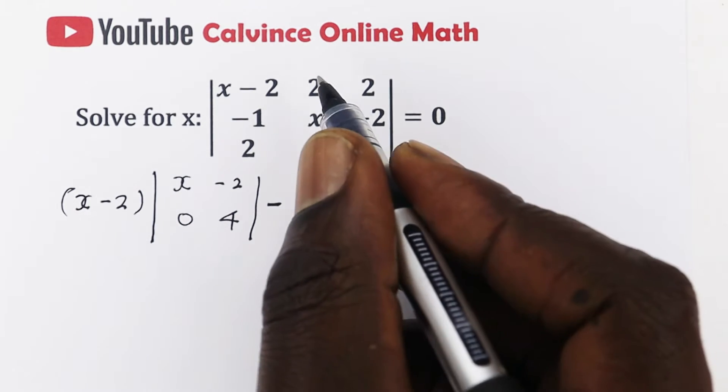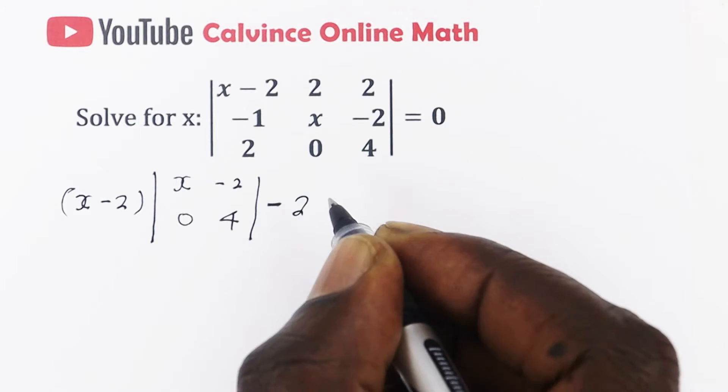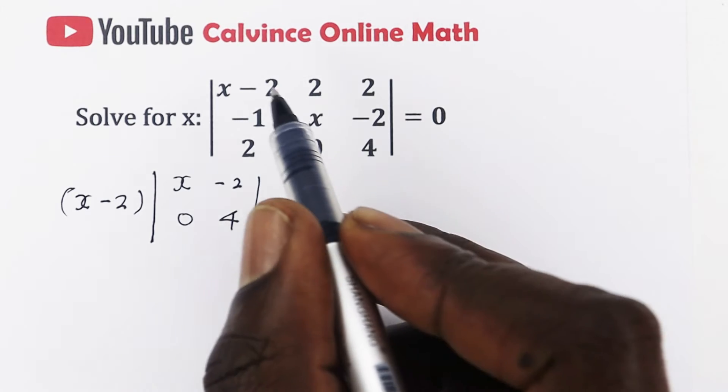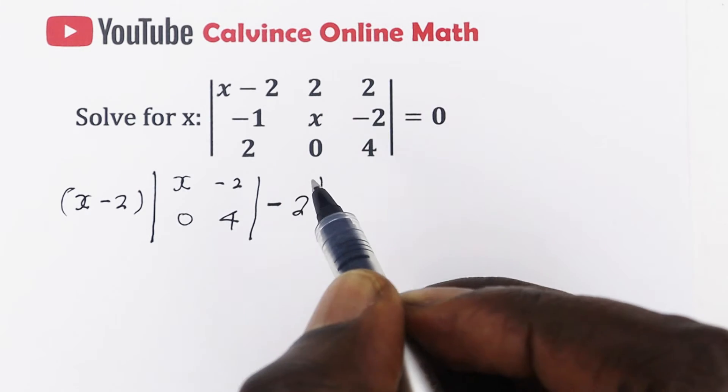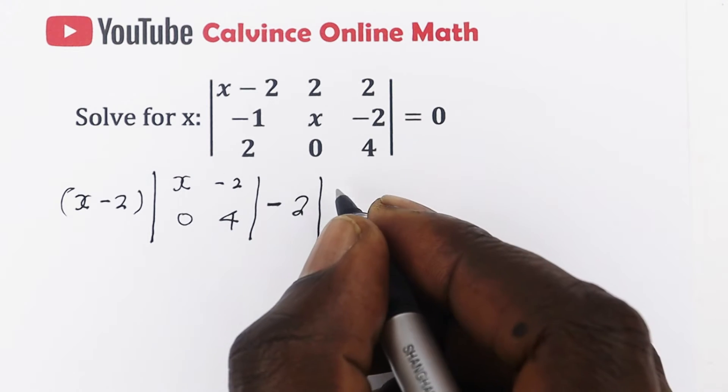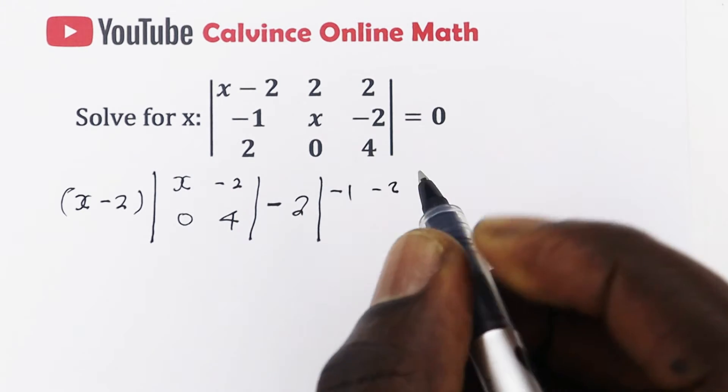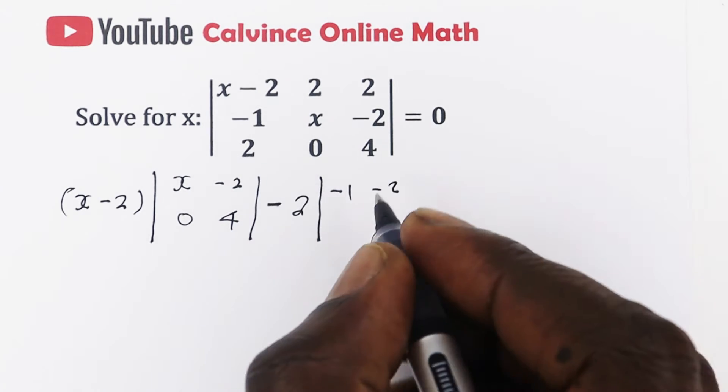Then you're going to subtract the next entry, which is 2 in this case. And again, you cover its row and its column. Then you're left with negative 1, negative 2, and you're also left with 2, 4.